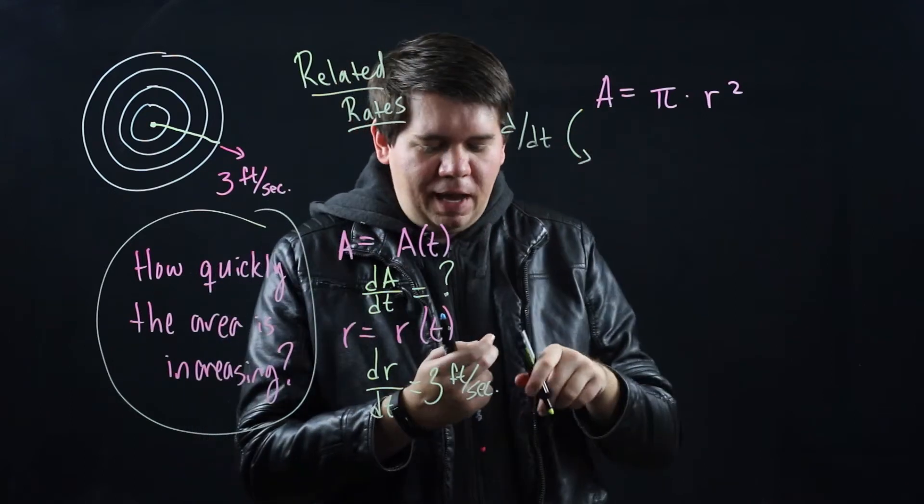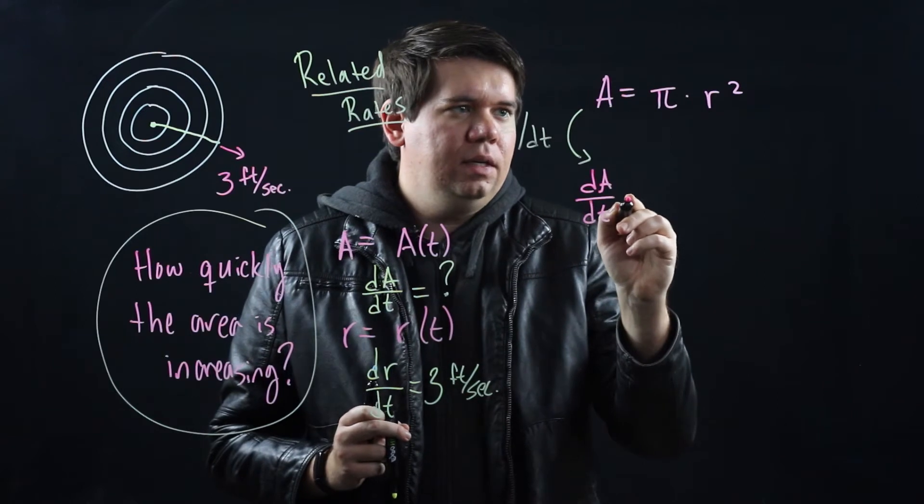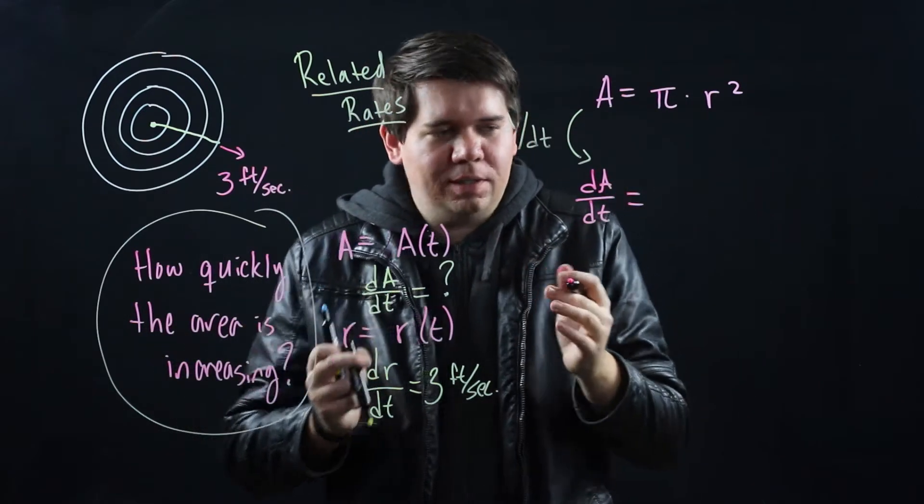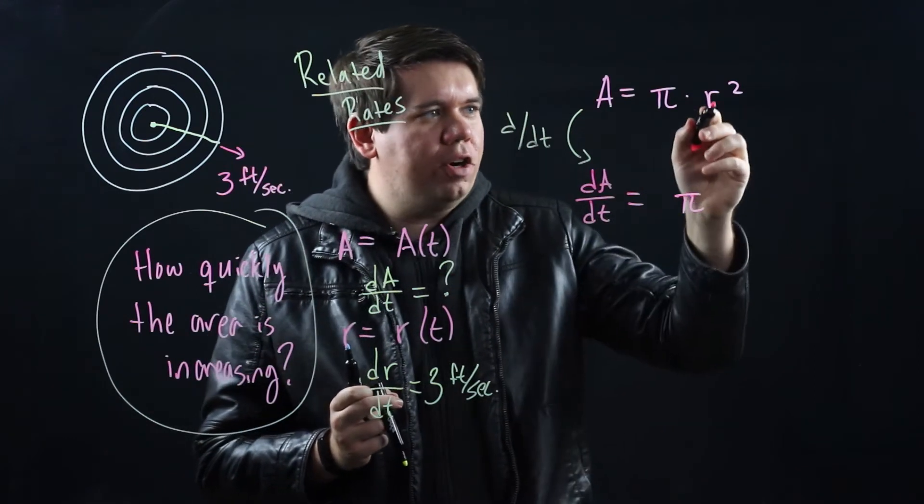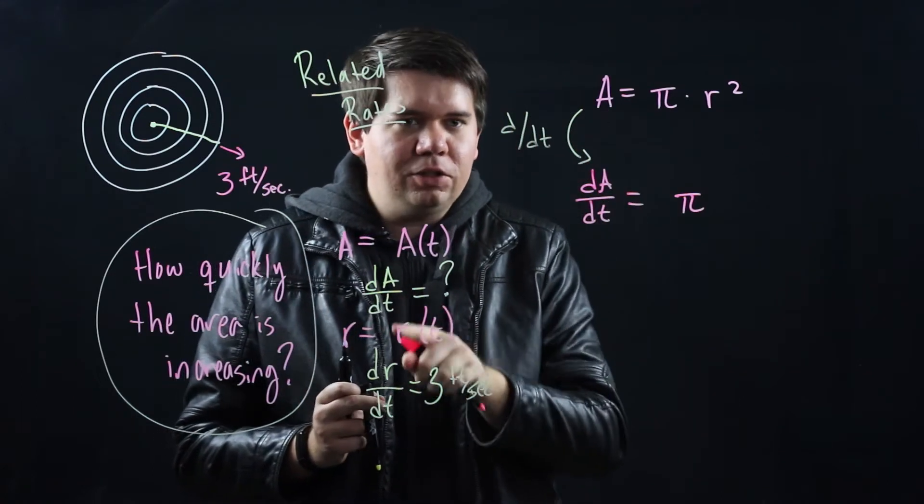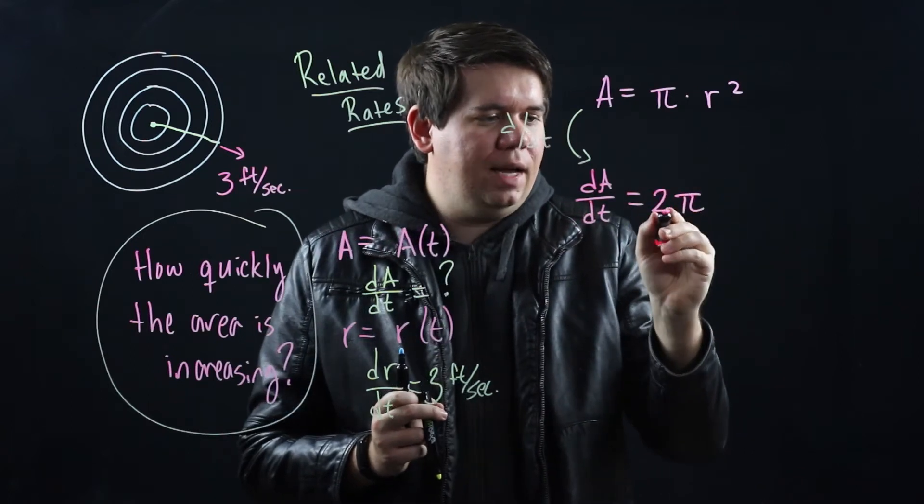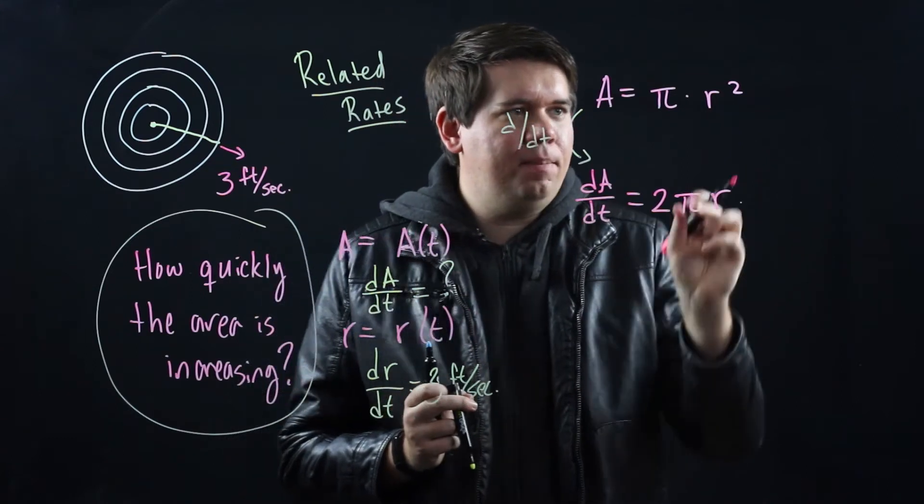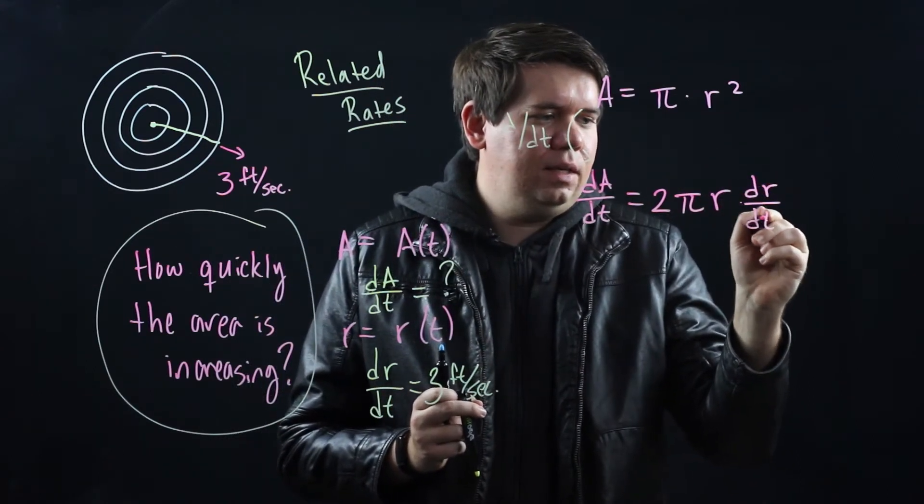So the derivative of A will just become whatever the derivative of A with respect to t is, equals π is a constant. Pi doesn't change over time. Pi is always the same thing. So we leave that as just π, and then we take the derivative of r², remembering that r is secretly some function of time. So we need to do the power rule. We need to bring the 2 down to 2πr, and then by the chain rule we need to multiply that by the derivative of r, whatever dr/dt is.